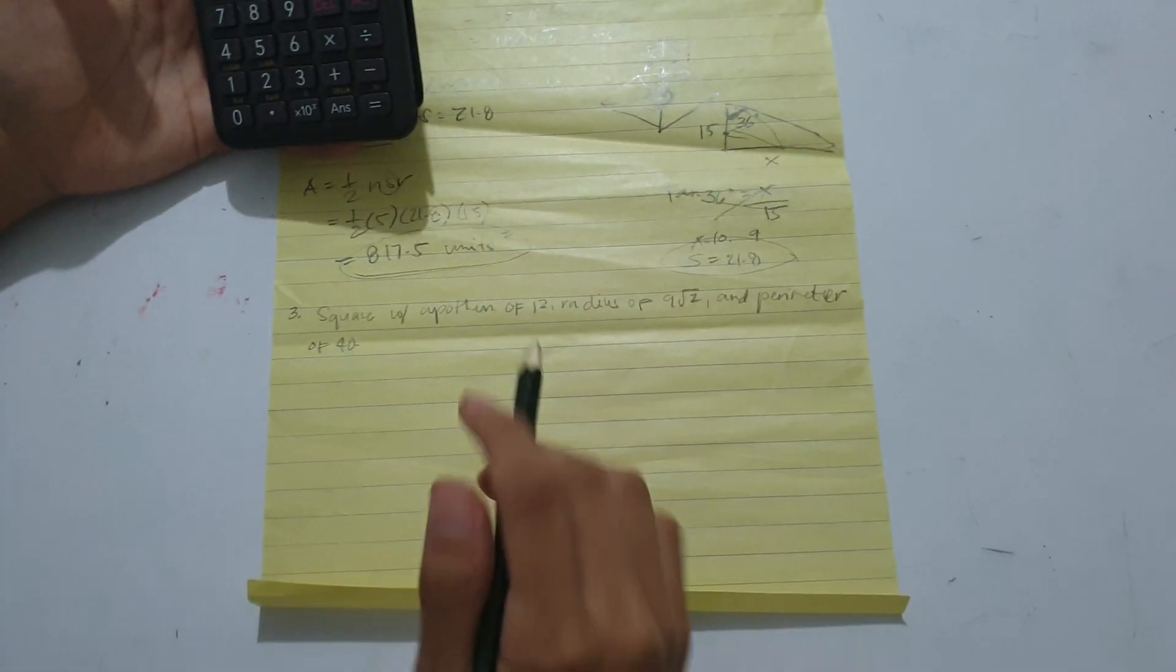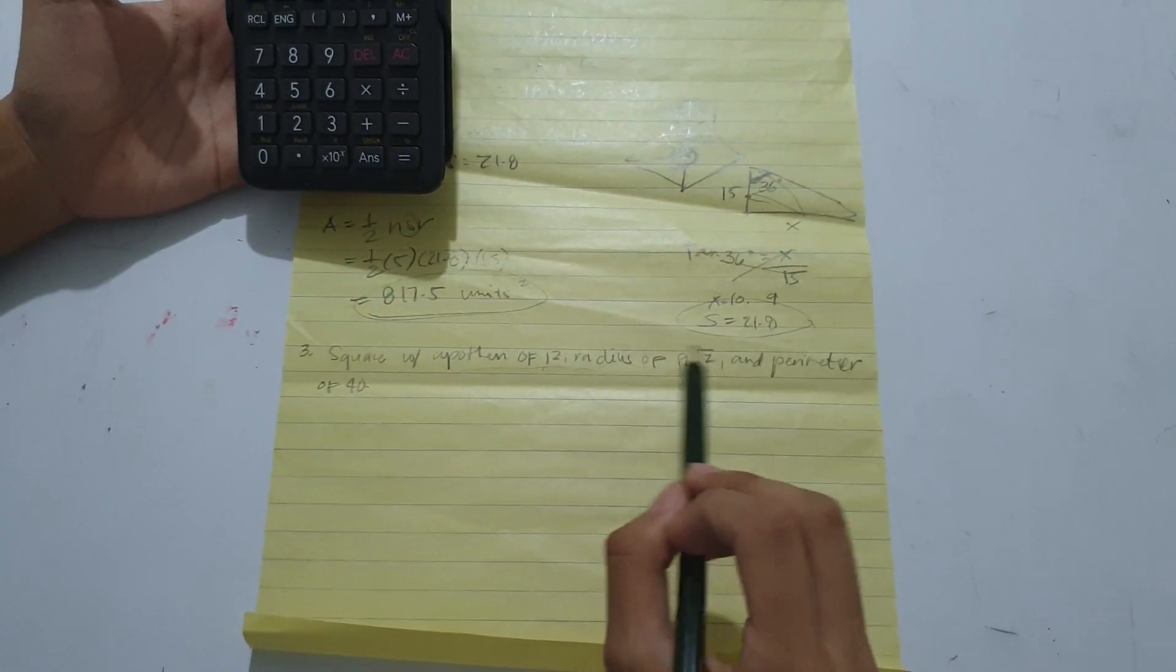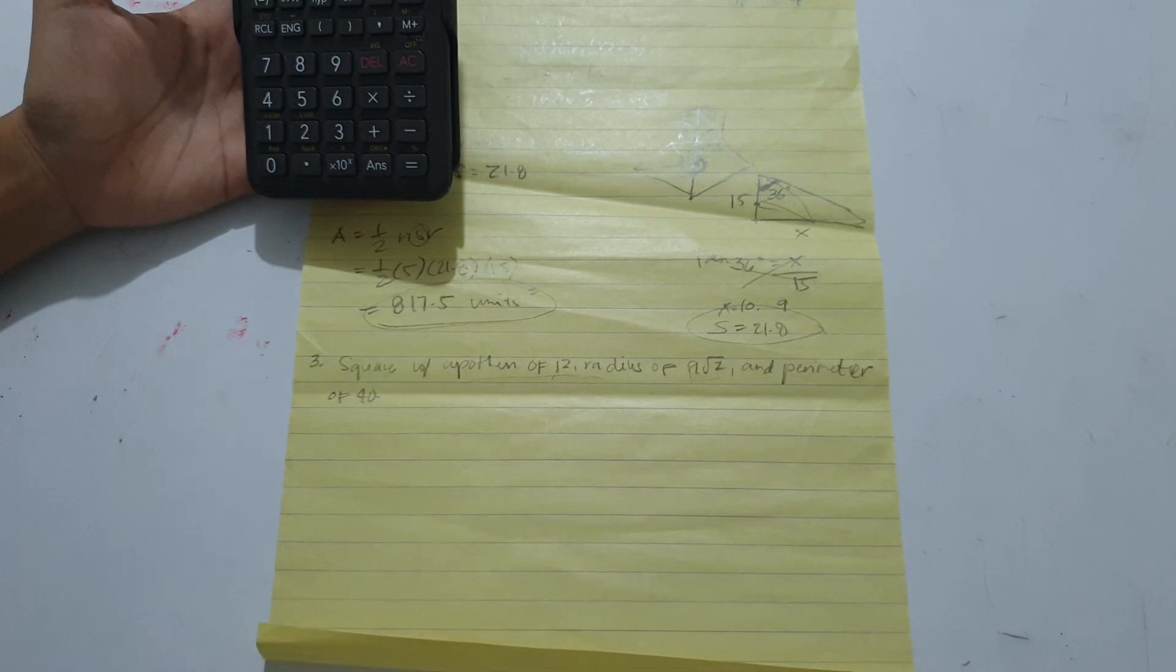Example number 3: square with apothem of 12, radius of 9 square root of 2, and perimeter of 40.